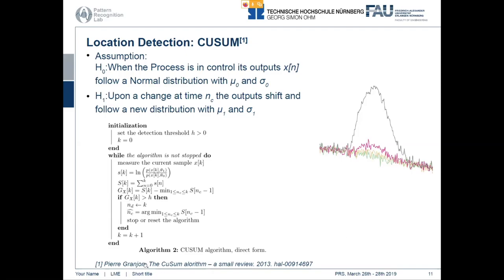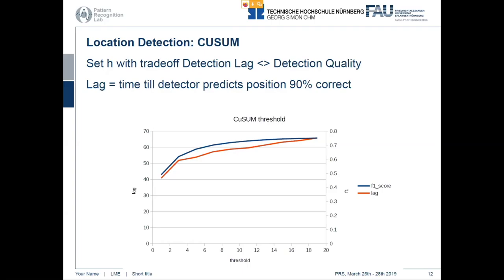If you're further interested, there are many papers out there — this is a nice small summary of it. Regarding the threshold, this is a trade-off tuning parameter where you can trade off the amount of lag — the time needed for the algorithm to detect the changes — versus the precision, here measured in the F1 score, how good the quality of the detection is. As you can see, with this basic algorithm we flat out at about 0.76 F1 score at a relatively moderate lag of 60. So the question is: can we do better?